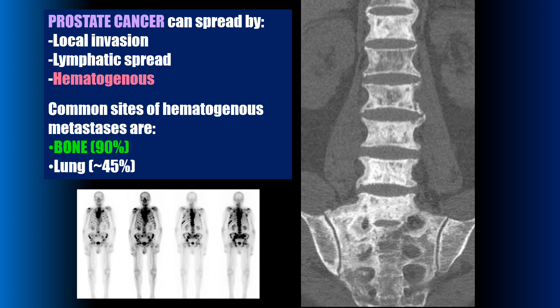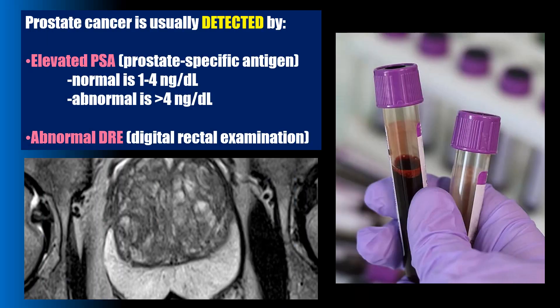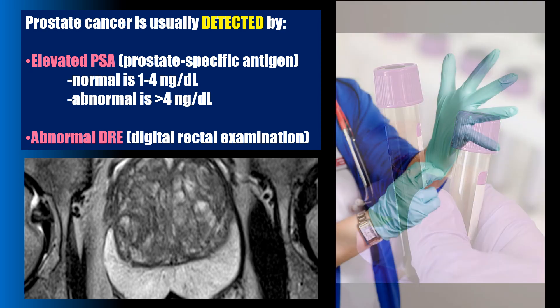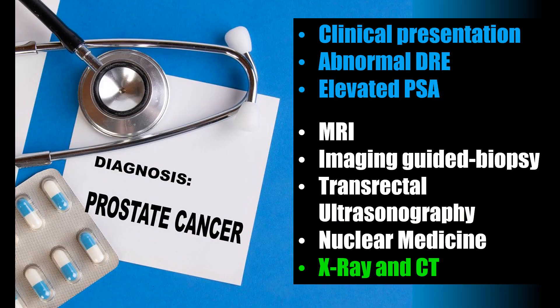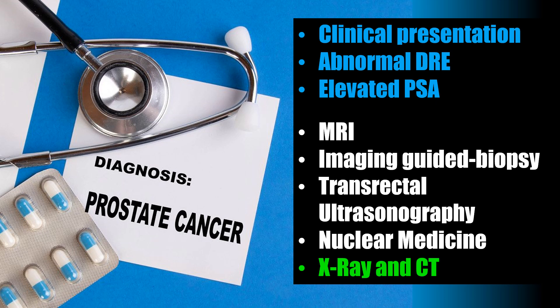It's really important to evaluate the bone when looking for metastasis. Prostate cancer is usually detected by elevated PSA — prostate specific antigen — with abnormal levels over four, and then an abnormal digital rectal exam. Diagnosis is made through a combination of clinical presentation, imaging findings including MRI, imaging-guided biopsy, transrectal ultrasonography, nuclear medicine, X-ray and CT — and here we're going to focus on X-ray.